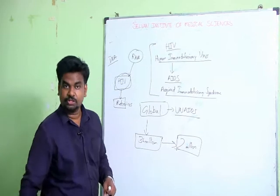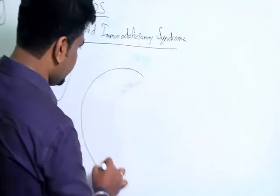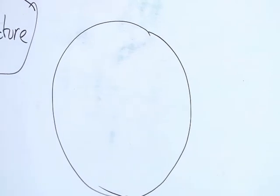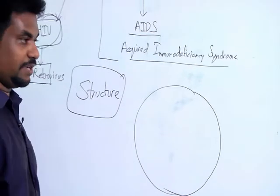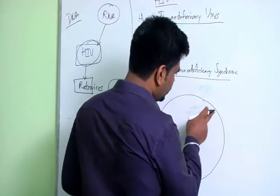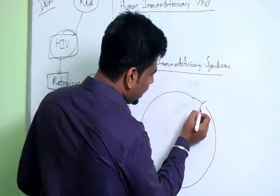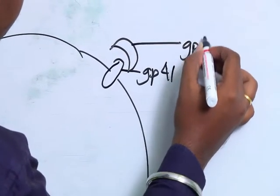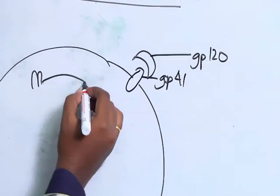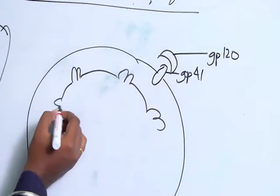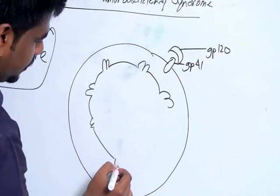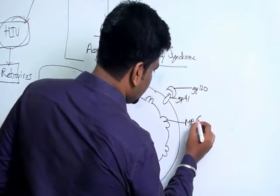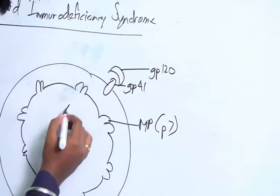The HIV consists of an outer lipid layer, which is stolen from the host cell it infects. This lipid layer consists of transmembrane proteins called GP41 and attachment proteins called GP120 anchored to it. Inside, it has a matrix protein, also referred to as P17.